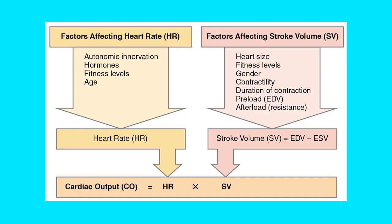Factors affecting heart rate include the autonomic nervous system — if you're scared or stressed, it goes up; if relaxed, it slows down. Hormones, fitness level, gender, and age all play roles. Factors affecting stroke volume include the size of your heart, fitness levels, gender, contractility, duration of contraction, preload, and afterload. Afterload is resistance. All these factors influence stroke volume and ultimately cardiac output.